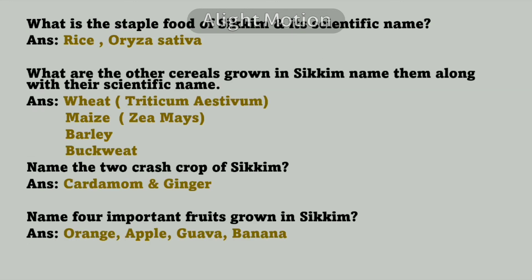What is the staple food of Sikkim? The staple food of Sikkim is rice, and its scientific name is Oryza sativa. What are the other cereals grown in Sikkim? The other cereals are wheat, maize, barley, and buckwheat. The scientific names of wheat and maize are also mentioned; you can write the scientific names of barley and buckwheat in the comment box.